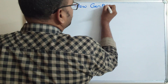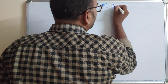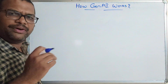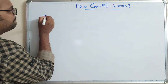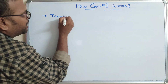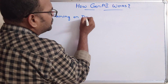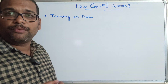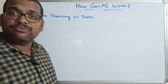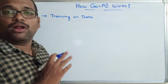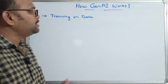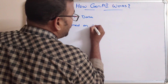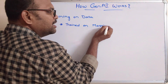How does generative AI create new content? This involves five steps or five phases. The first one is training on data. Just like in traditional AI, the training is done from datasets — a massive, very large dataset is taken and the AI model is trained on that particular dataset.